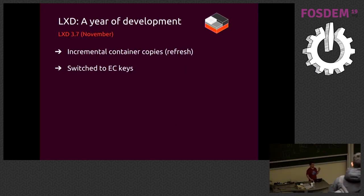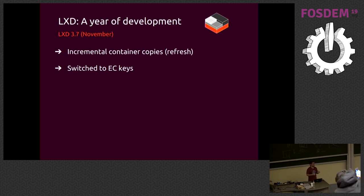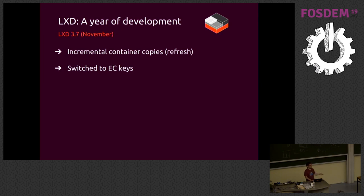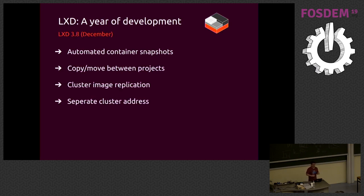In another release: incremental container copies, letting you update an existing container on a backup host by running background copies from one host to another to keep it up to date. We also switched our default keys to elliptic curve, mostly because some architectures were very slow with RSA — EC was significantly faster to generate and provides slightly better security.